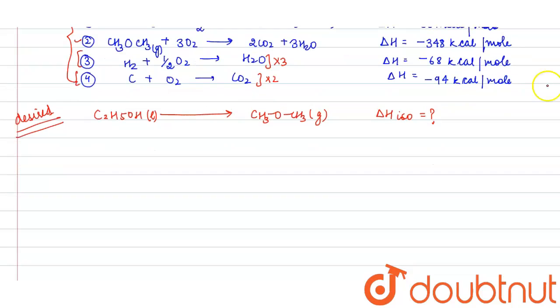What I said is you need to multiply equation 3 with 3, then add it with 2 into multiplication of equation 4. Then subtract equation 1 and then also subtract equation 2. When you apply this manipulation in the above four equations, you will get your desired isomerization reaction.